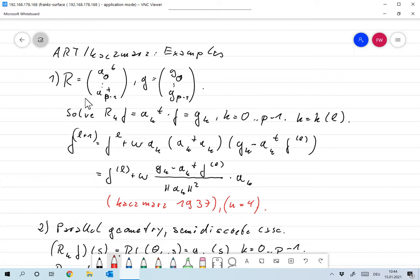So, we assume that we want to solve a linear equation Rf equals G. We wish to solve the matrix vector equation Rf equals G, fully discrete. By Ak transpose, we denote the rows of R. By Gk, we denote the elements of G. Then solving Rf equals G is equivalent to solving Rkf equal to Gk, where Rk is just Ak transpose, and we want to solve this simultaneously for K from 0 to P minus 1.